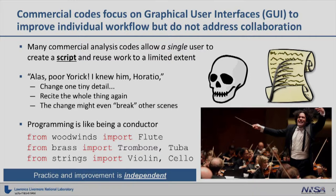Commercial codes focus on the graphical user interface to improve individual workflow, but what they don't address is a way to collaborate with other engineers across your design organization. If you have a script, which some graphical user interfaces will generate for you, you can change a few parameters — but if you get away from some of the core concepts of that script, you change one small detail and you'll have to run through the whole thing over again. By contrast, writing a computer program is a little bit like being a conductor: you get the resources that you need and then you exercise those resources and put the whole thing into process as a symphony. If you want to improve a given section or a given instrument, you can do that independently of the other instruments.